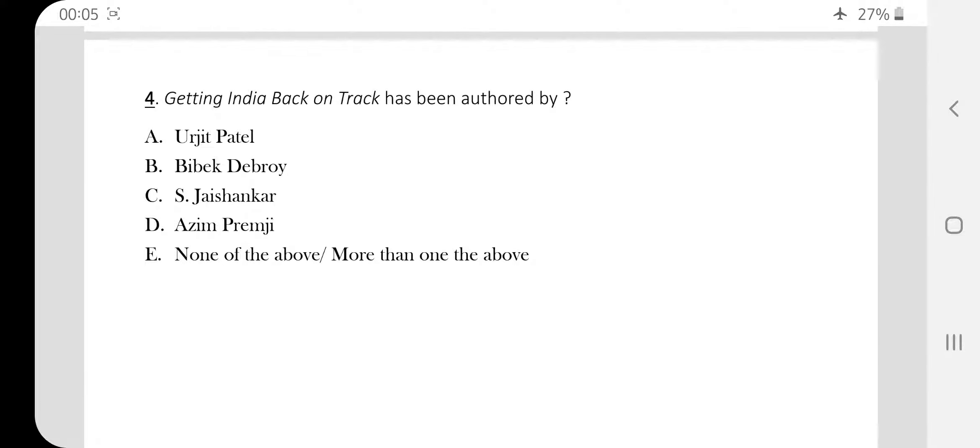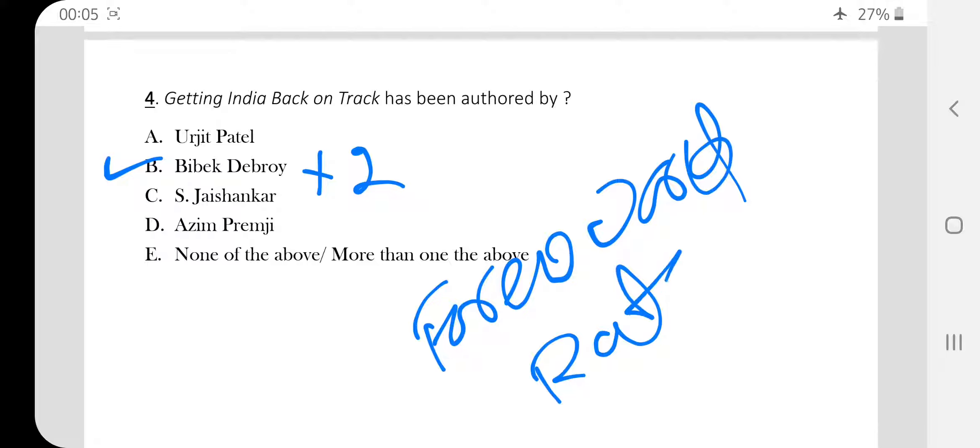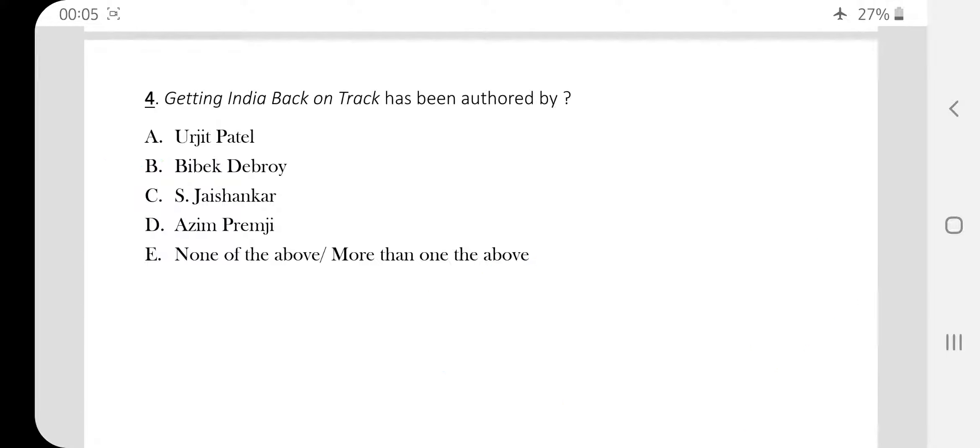Getting India Back on Track has been authored by. So the author of this book is option B, Vivek Debroy, plus two other people, but primarily Vivek Debroy. The foreword of this book has been written by Ratan Tata.